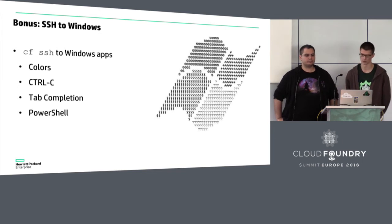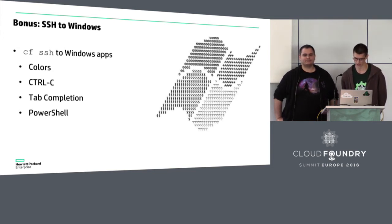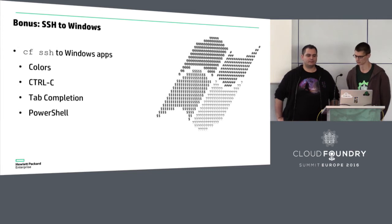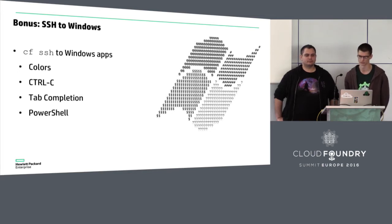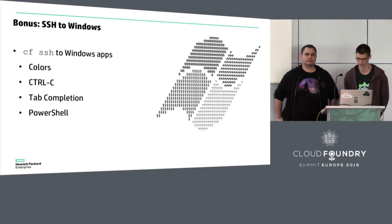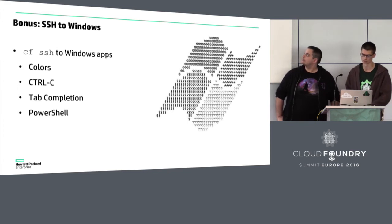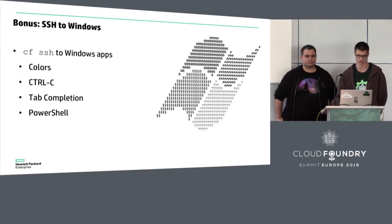We also have SSH support for Windows 2016, which means CF SSH to a Cloud Foundry app for Windows works — very useful when debugging running applications. We use Cloud Foundry's Diego SSH server, which is written in Go with additional changes to use WinPTY. WinPTY is an open source project that brings PTYs to Windows and translates between Windows console actions to a TTY stream usable by an SSH client. This enables features like history, tab completion, Control-C, and so on.